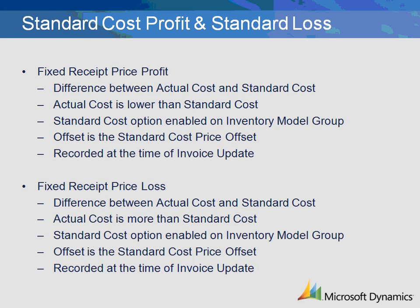The fixed receipt price profit transaction is the setup related to the recording of a price difference between the standard cost of an item and the purchase price recorded at the time of purchase invoice update. The ledger account is a profit and loss type account that will be credited at the time of the purchase order invoice update. This transaction will only occur if you are using standard costing as defined in the inventory model group associated with the item.